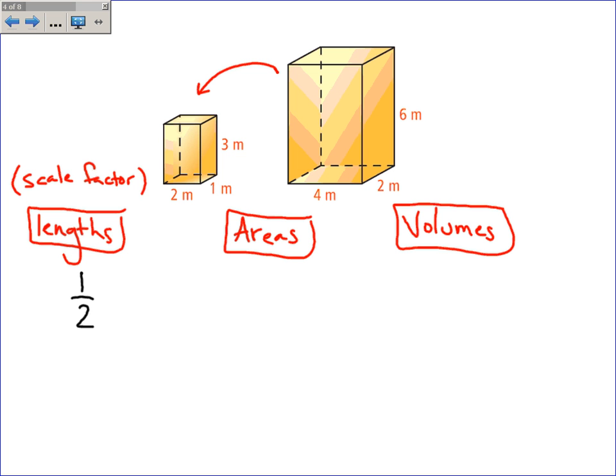Now, lengths are a one-dimensional thing. Areas are a two-dimensional thing. So, if I take 1 squared over 2 squared, I get a ratio of 1 fourth. The ratio of areas is 1 fourth. So, the area of the base, the lateral area, the surface area, anything dealing with an area will have a ratio of 1 to 4 or 1 fourth.